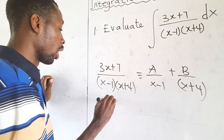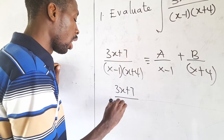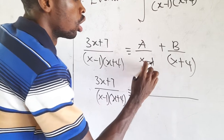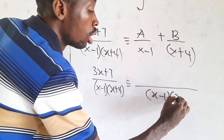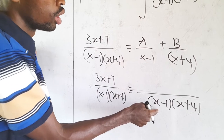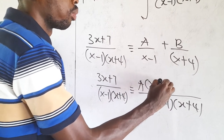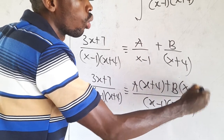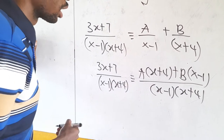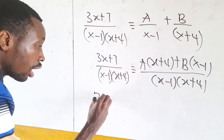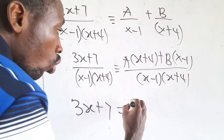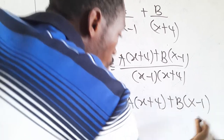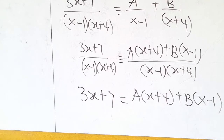We can say that (3x + 7) over (x − 1)(x + 4) is equivalent to the common denominator (x − 1)(x + 4), giving us A(x + 4) plus B(x − 1). Since the denominators are the same, we can equate the numerators: 3x + 7 equals A(x + 4) plus B(x − 1). Now, what do we do to find the values of A and B?